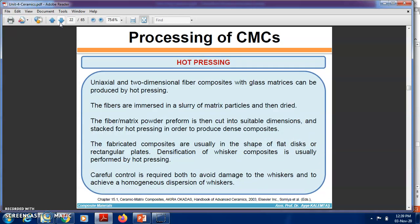Next, the hot pressing process: uniaxial and two-dimensional fiber composites with a glass matrix can be produced by hot pressing. The fibers are immersed in a slurry of matrix particles and then dried. After that, the fiber-matrix powder preform is cut into suitable dimensions and stacked in hot pressing in order to produce the dense composite. The fabricated composites are usually in the shape of flat or rectangular plates.